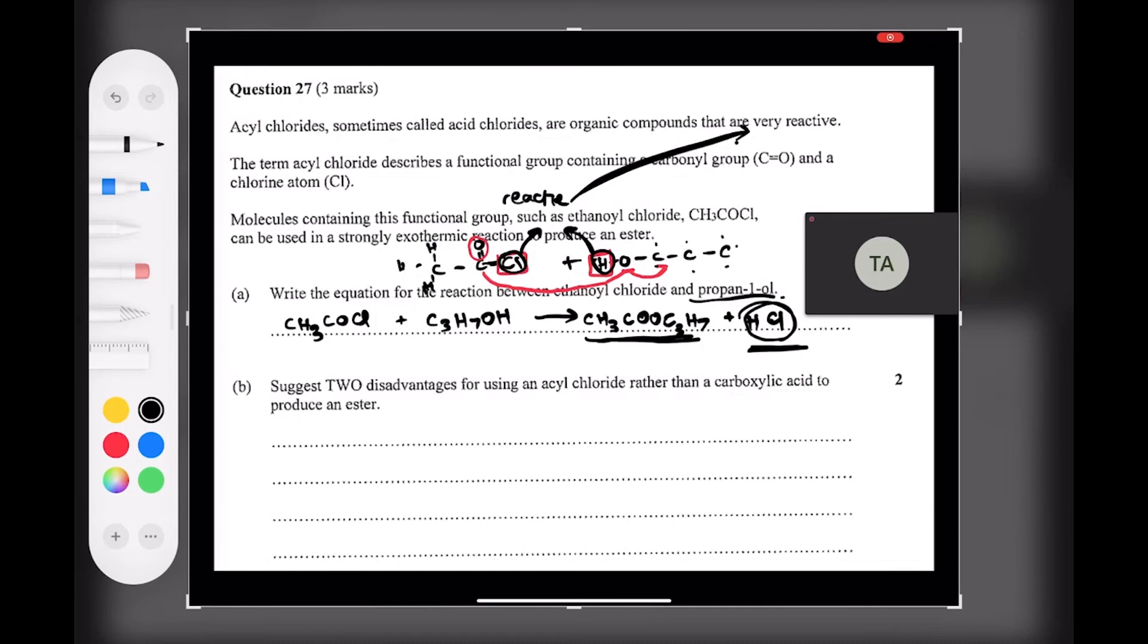Now I'm anticipating for the next question, which is the two disadvantages. They're going to be related to this, because that is the difference between normal esterification and this type of esterification. So there are two disadvantages for using an acyl chloride rather than a carboxylic acid to produce an ester. What are we all thinking? Hydrochloric acid is a more dangerous compound than the water that would be normally produced. Yeah, very good. So that's safety considerations, and it's also a volatile gas. Even though we can do refluxing, some gas can escape, so it potentially can be safety effects.